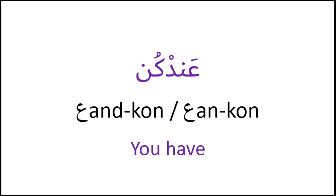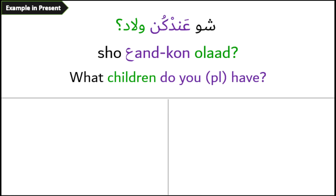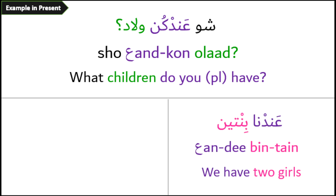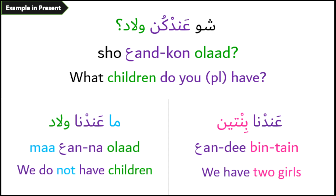عندكن or عنكن – you have (plural). Example: شو عندكن ولاد؟ – What children do you have? (to a plural group). The reply: عنا بنتين – We have two girls. Or to negate: ما عنا ولاد – We don't have children.